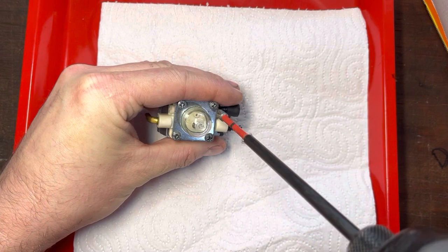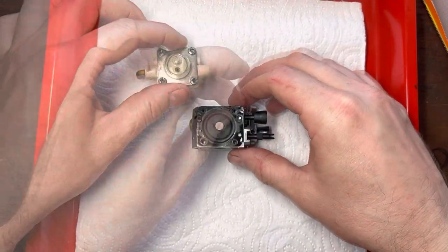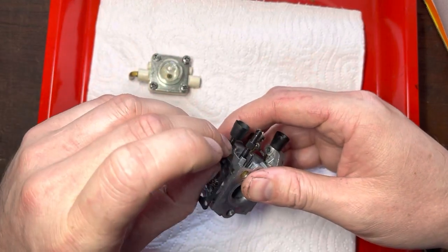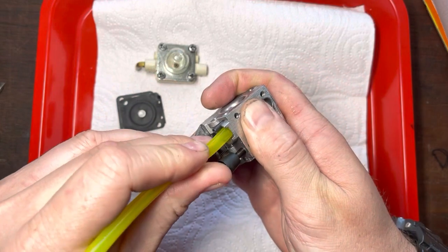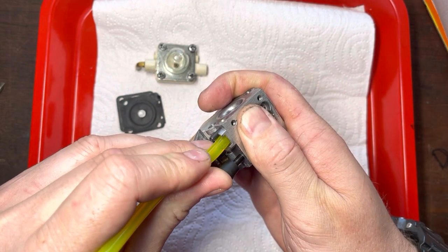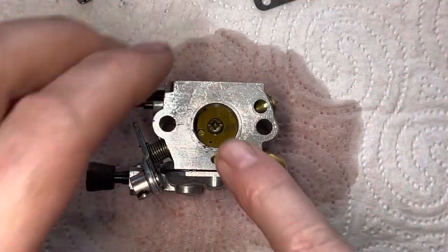We'll have to dig a bit deeper and take the metering side of the carb apart. Diaphragm and gasket come off and what we need to do is have a quick look. Double check that the main nozzle is actuating and this one it is. Your purge won't work if it's not so that's not the issue.